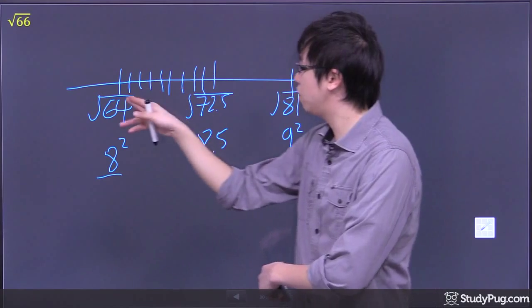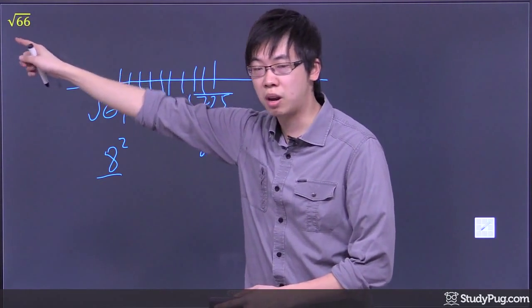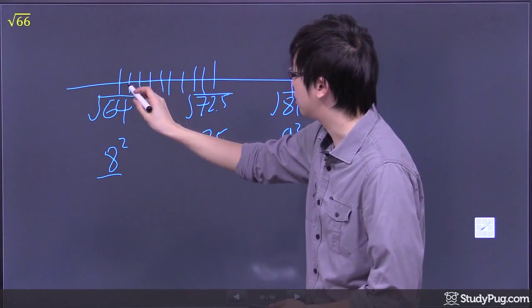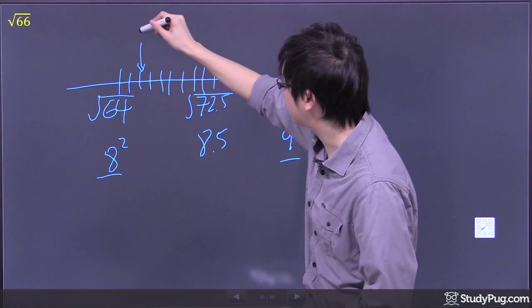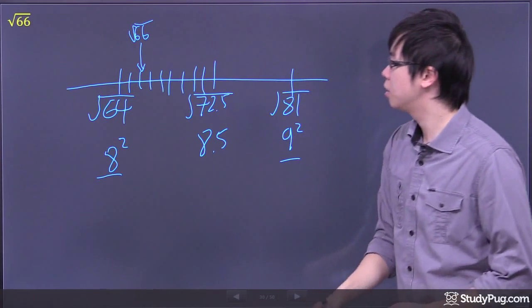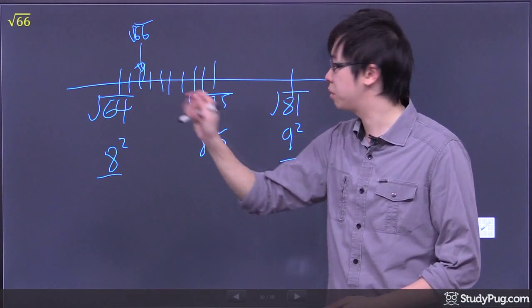Then I think, okay, every unit is a one now. So that's 66 right? This is 64, 65, 66 is right here. This is my 66. So that's root 64, root 65, root 66.